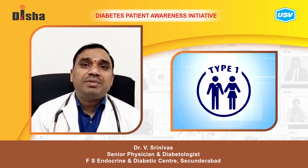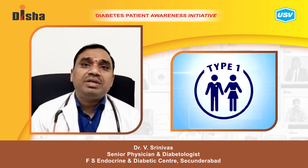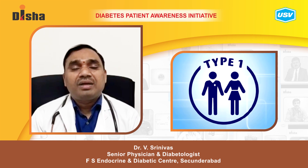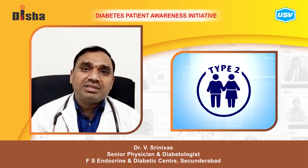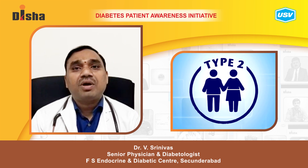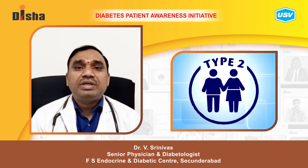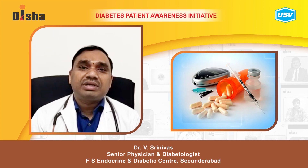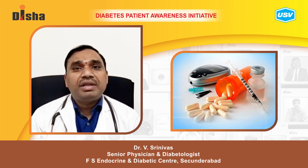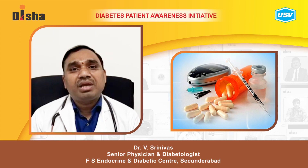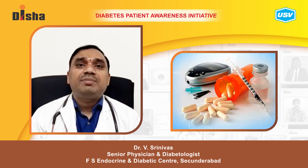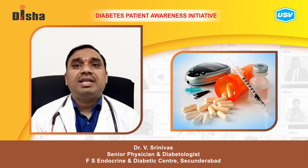Type 1 diabetes involves absolute insulin deficiency where patients have to be treated only with insulin. In type 2 diabetes, insulin is present but not acting, so it can be managed with tablets for some time. When medications are not able to achieve target levels, insulin may be required at a later time.